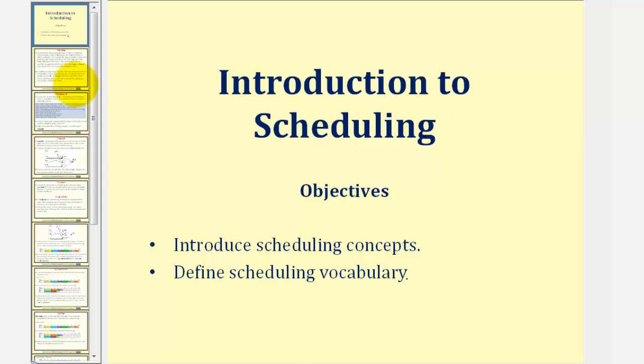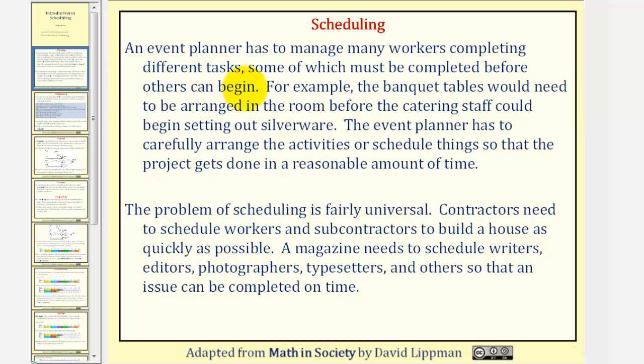Welcome to Introduction to Scheduling. An event planner has to manage many workers completing different tasks, some of which must be completed before others can begin. For example, the banquet tables would need to be arranged in the room before the catering staff could begin setting out silverware. The event planner has to carefully arrange the activities or schedule things so that the project gets done in a reasonable amount of time.